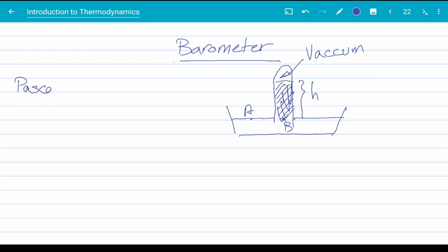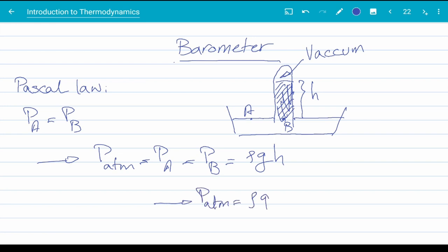Now, with that out of the way, we know from Pascal's law that p of a is equal to p of b. p of a is equal to the atmospheric pressure of air, while p of b is the weight of the fluid column above it. So p of atmosphere is equal to rho gh. So when you hear the pressure is x millimeters of mercury or something like that, it means that the fluid of the barometer is mercury and the height of the column is x millimeters.